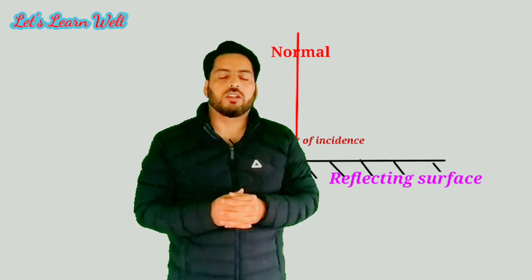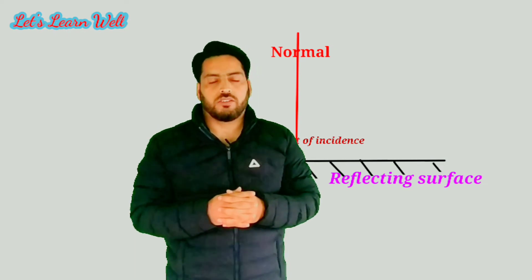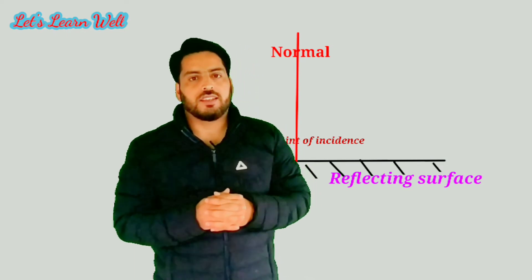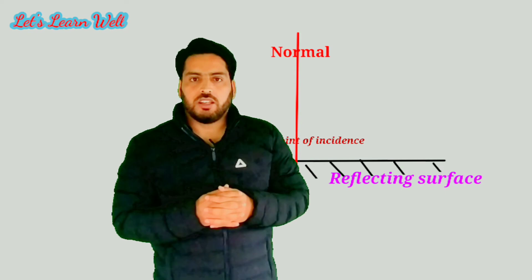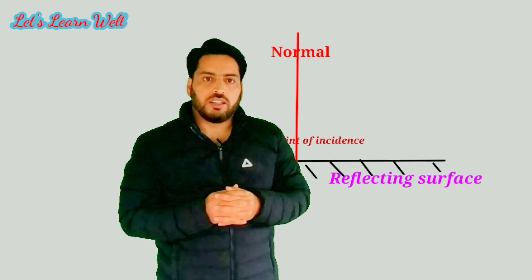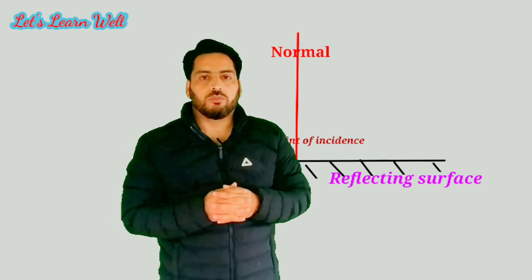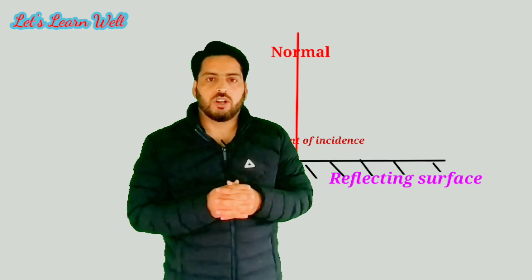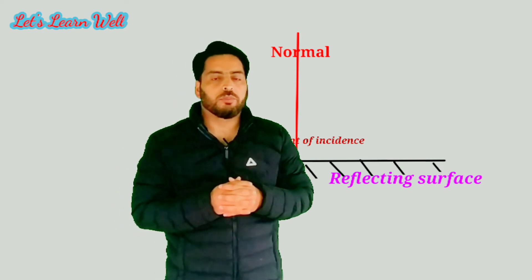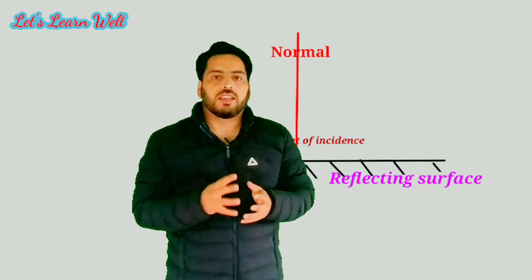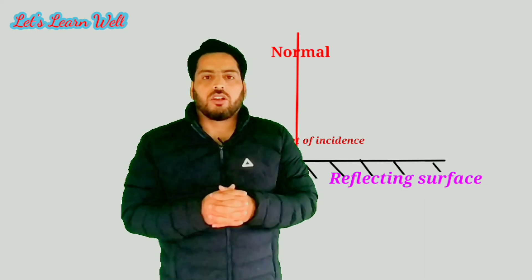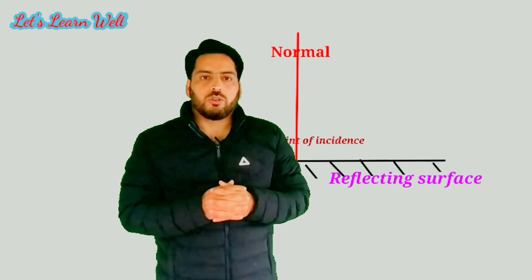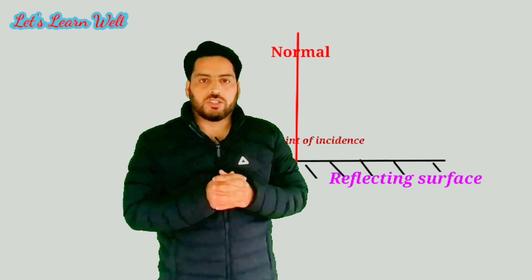So students, today we understood the two laws of reflection. The first law states that the incident ray, the reflected ray, and the normal at the point of incidence all lie in the same plane. The second law states that the angle of incidence is always equal to the angle of reflection.